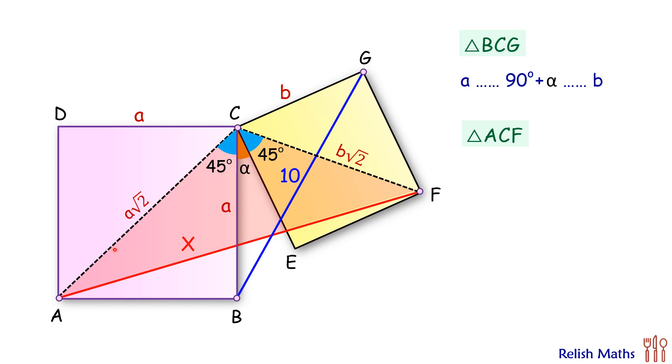So in this triangle ACF, side-angle-side will be a√2, 90 plus alpha, and b√2. Here the ratio of the sides is 1 to √2, and the angle between those two sides are the same, 90 plus alpha.